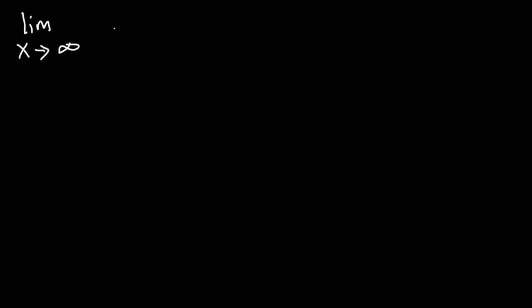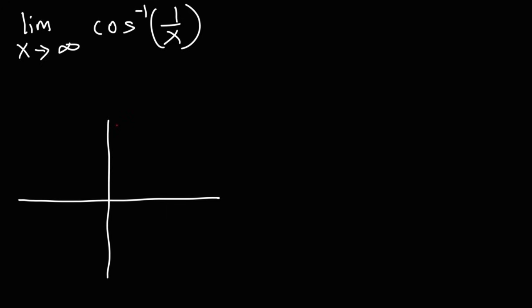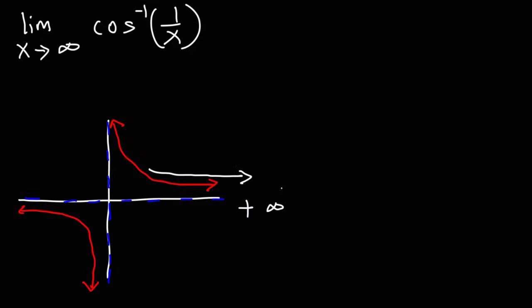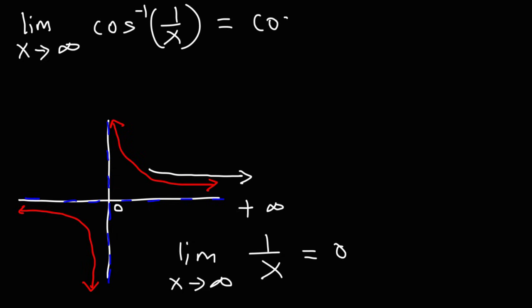Let's work on another example: What is the limit as x approaches infinity of arc cosine of 1 over x? The graph of 1 over x has a vertical asymptote at x equals 0 and a horizontal asymptote at y equals 0 since it's bottom-heavy. As x increases toward positive infinity, the curve approaches a y value of 0. So the limit becomes arc cosine of 0.